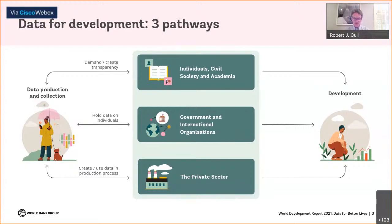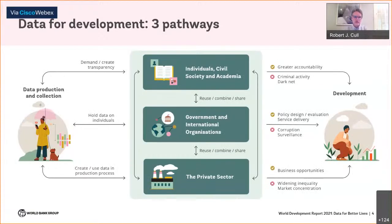Further examples include holding governments accountable through applications allowing citizens to report requests for bribes from officials, basic benchmarking of progress towards important policy priorities such as financial inclusion. Our next speaker will do a deeper dive on research that combines satellite imagery data with data from other sources to produce timely, more granular estimates of area under cultivation and agricultural yields. The point is to illustrate that data really do hold great promise for improving the lives of the poor.